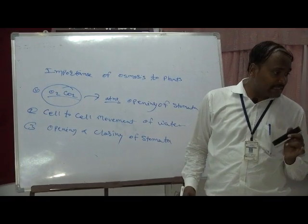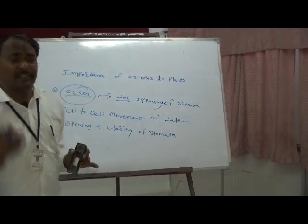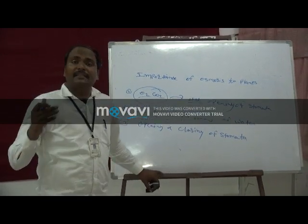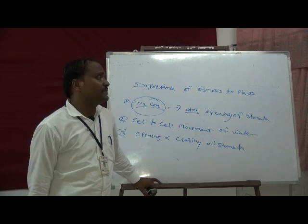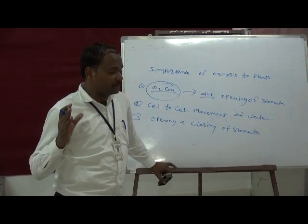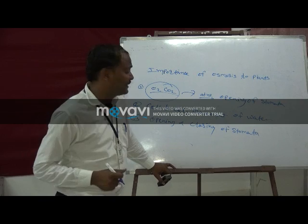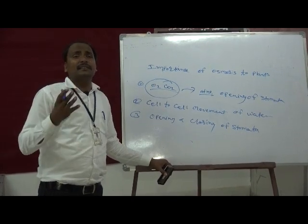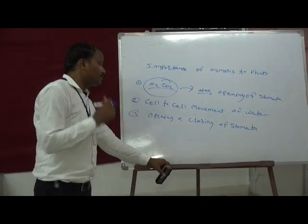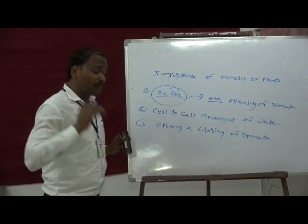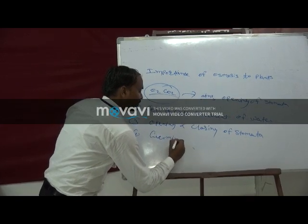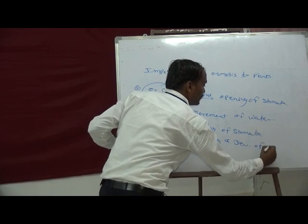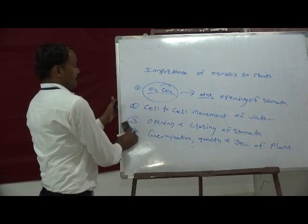Osmotic pressure and turgor pressure help in the growth and development of the plant, as well as in the germination of seeds. When the osmotic pressure in the seed is high, water from the surrounding enters into the seed. The turgor pressure in the seed cell increases, the seeds swell up, metabolic activities increase, and germination of the seed takes place. So germination, growth and development of plants are also controlled by osmosis.